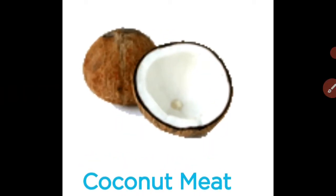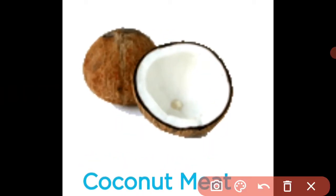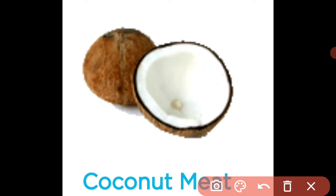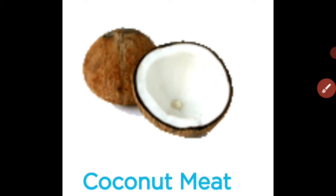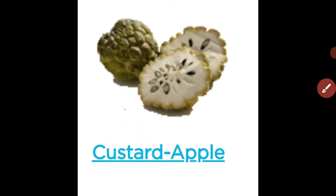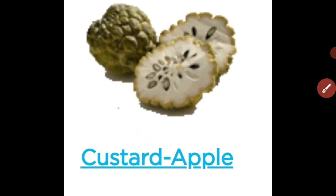Coconut meat — this is the coconut meat, the white part, and this is the coconut. Custard apple.